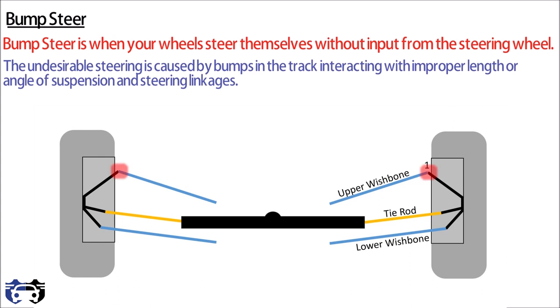Number two is the inner joint of upper wishbone that is connected to chassis of vehicle. Number three is the outer joint of tie rod connected to steering arm. Number four is the inner joint of tie rod connected to steering rack.